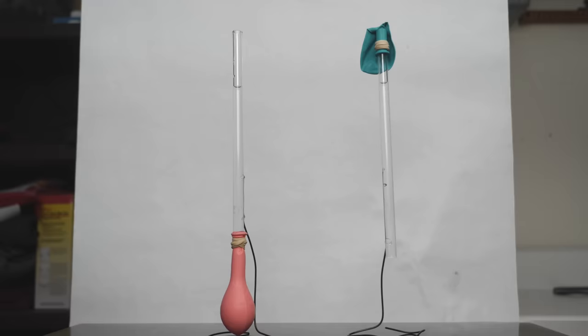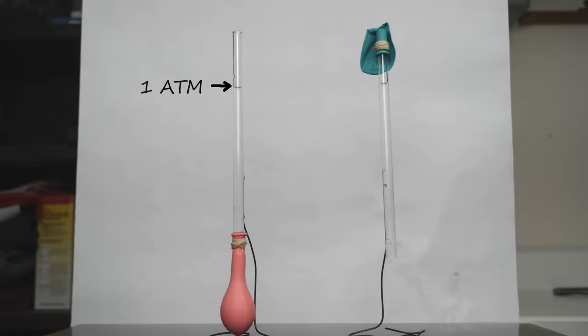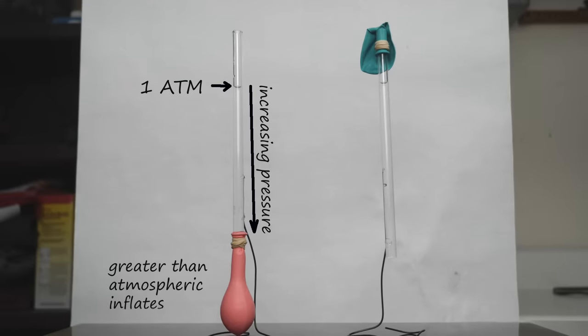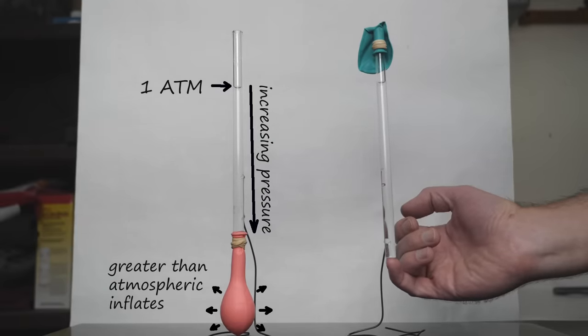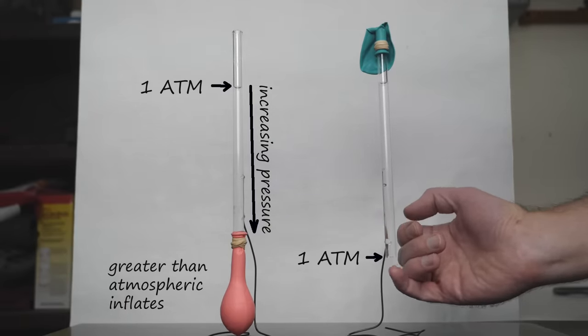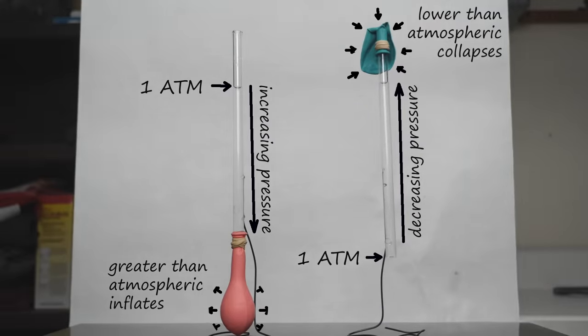We can see the effect in these two straws. Anywhere the air contacts the fluid, we know the pressure is atmospheric. In the straw on the left, we follow the fluid downward and the increased pressure inflates the balloon. But for the straw on the right, atmosphere contacts the bottom of the straw, telling us the pressure inside the straw is below atmospheric. That pulls air out of the balloon, which is then collapsed by the atmosphere around it.